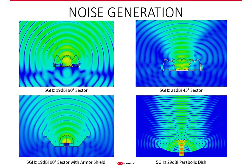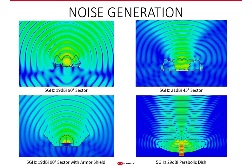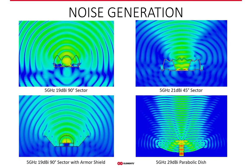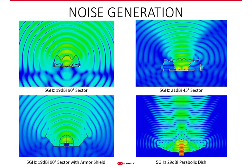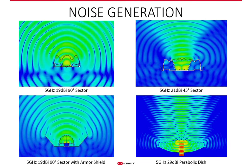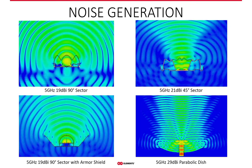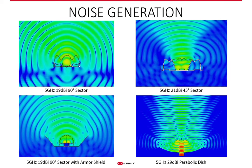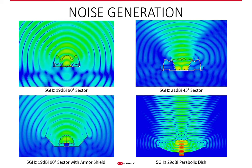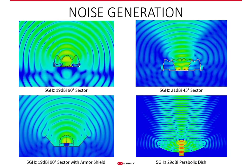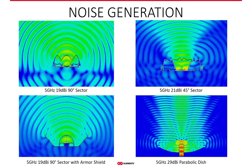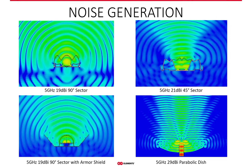Here you see examples of how the noise is generated. Besides the main direction, these antennas radiate energy in every other direction as well. This weaker radiation is the cause of the side lobes that create unwanted coverage. So these antennas transmit and receive noise from their surroundings.